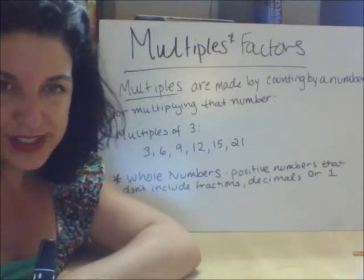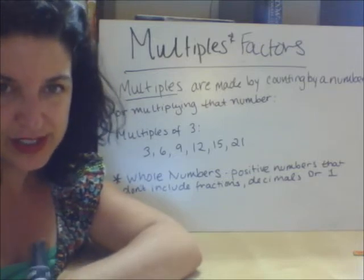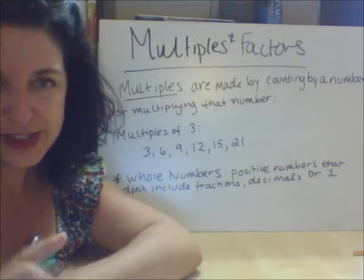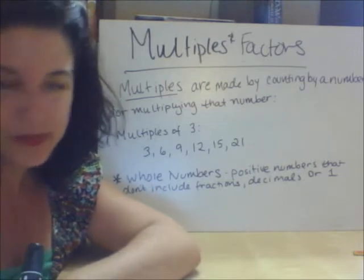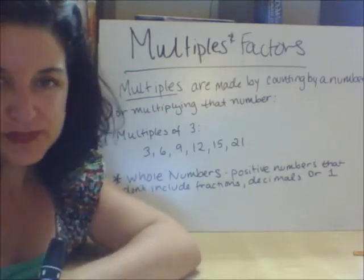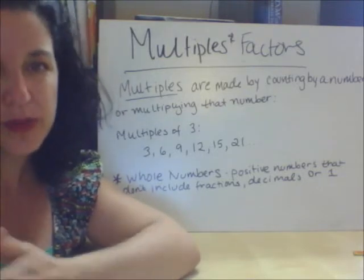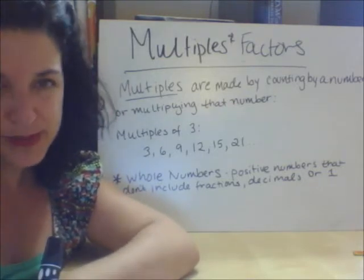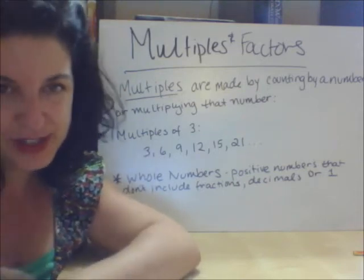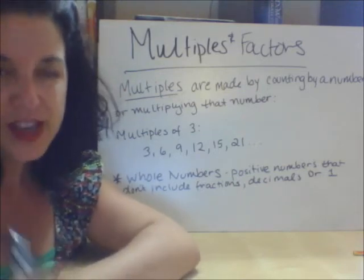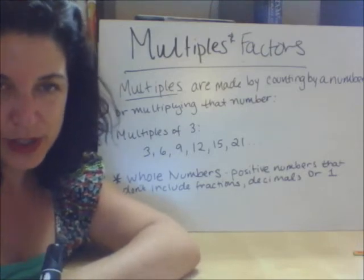So multiples — we're going to be defining a couple of new terms for these concepts, so it's important to note there are a few words you may or may not have heard before. The first one is multiples. Multiples are made just by counting by a number or by multiplying by that number. For example, multiples of 3: 3, 6, 9, 12, 15, 21, et cetera. Those are all multiples of 3. It's a very good word to know.